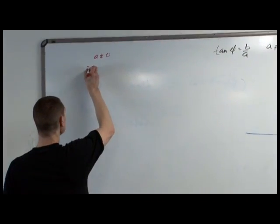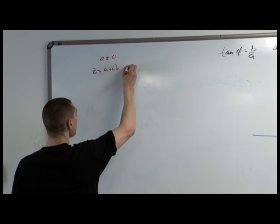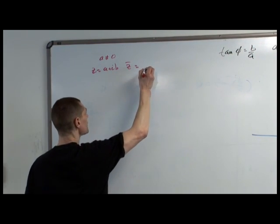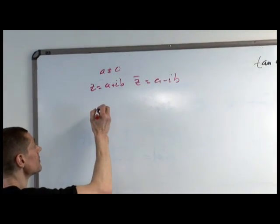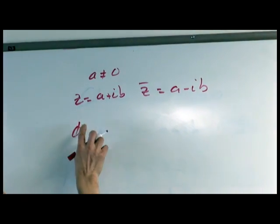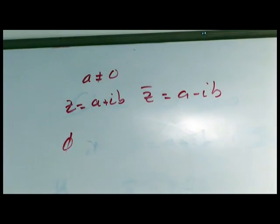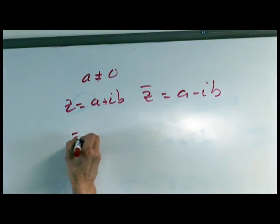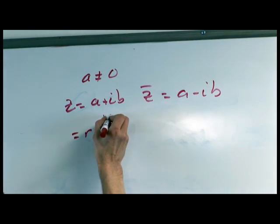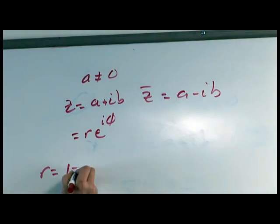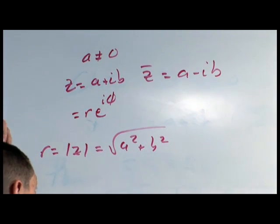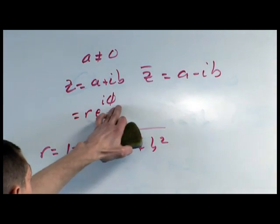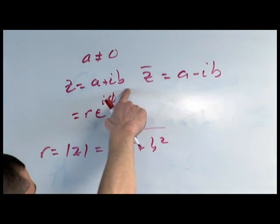We know if z is equal to a plus ib, then z bar, which is the complex conjugate, is a minus ib. By the definitions we've established, we know that theta, which is associated with this... actually let me be more clear about where and why theta is. z is also equal to r e to the i theta, right? Where r is the norm of z, which is the square root of a squared plus b squared.